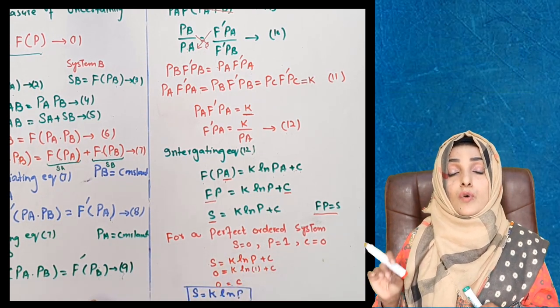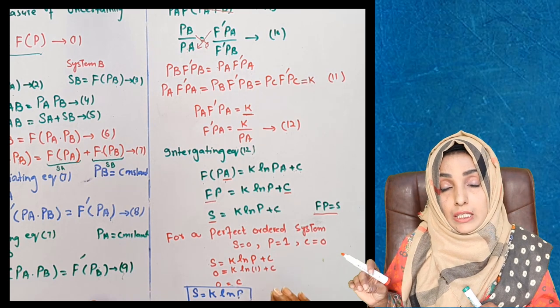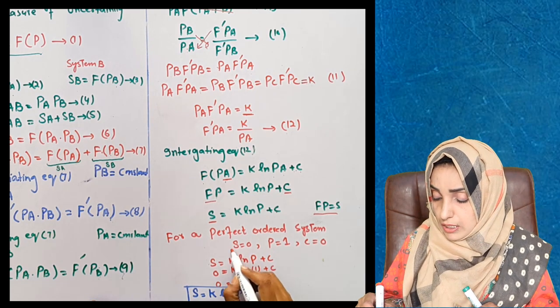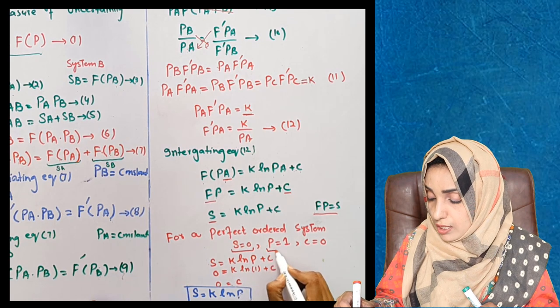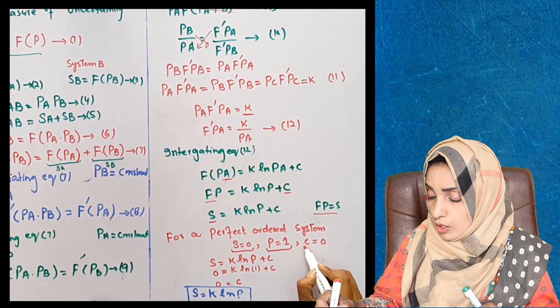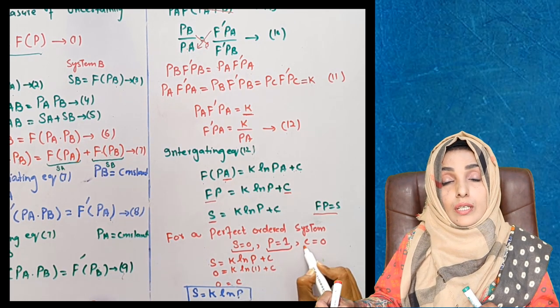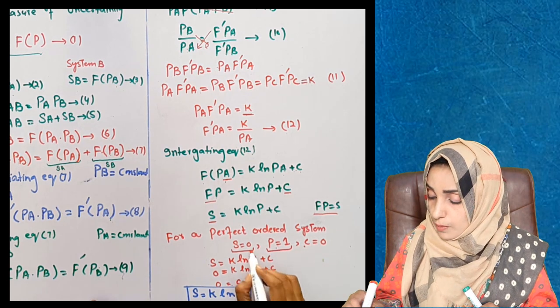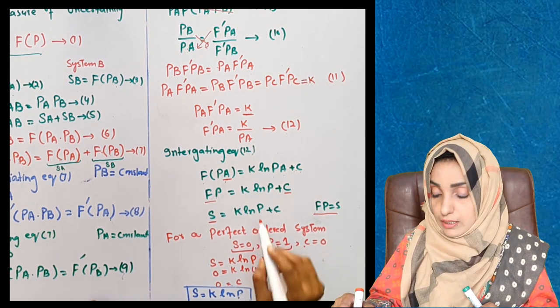Now if we want to write this system for a perfect order system, for that system entropy is zero, probability is one, and its integration constant is zero. We can find these two values by putting them in this equation.